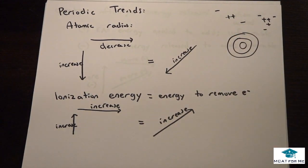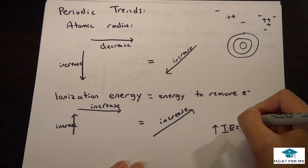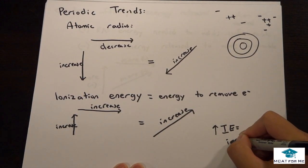So ionization energy. So ionization energy is the energy it requires to remove an electron. So if something has a very high ionization energy, that means there's going to be a lot of intermolecular forces.